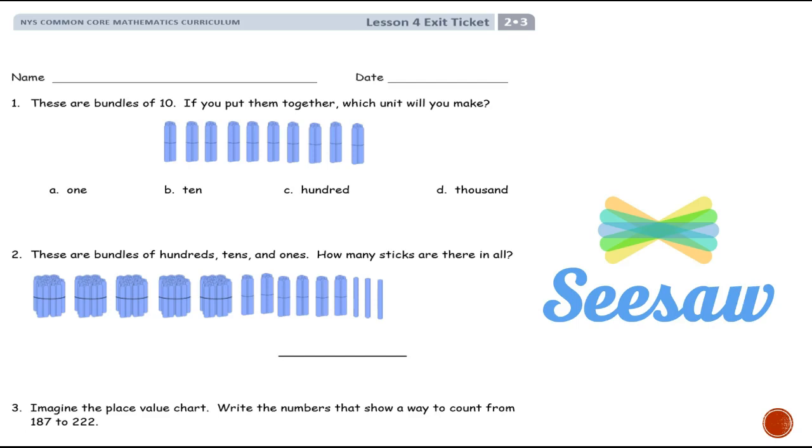Now it's your turn to do your exit ticket. You are going to do 1, 2, and 3 here. So you need to get out your sheet or do it on your desk or dry erase board. Number 1 says these are bundles of 10. If you put them together, which unit would you make? Would you make ones, tens, hundreds, or thousands? Number 2 says these are bundles of hundreds, tens, and ones. How many sticks are there in all? So you're going to need to tell me how many are here counting these bundles. And number 3 is imagine the place value chart. That's the place value chart that we were just working with. Write the numbers that show a way to count from 187 to 222. Good luck.